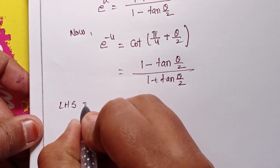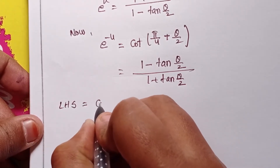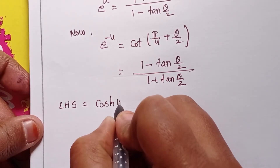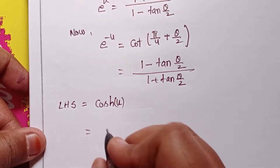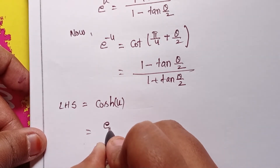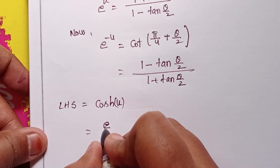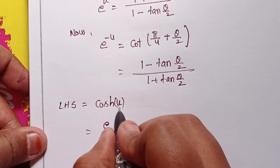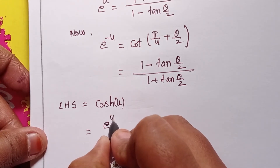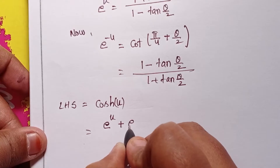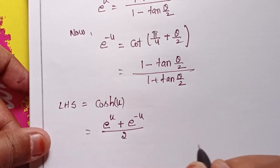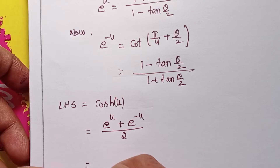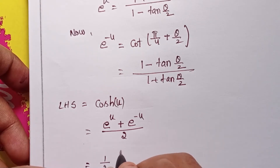The LHS is given as cosh u. The formula for cosh x is (e^x + e^(−x)) / 2. Here, in place of x, u is there, so cosh u = (e^u + e^(−u)) / 2. Now I will substitute the values of e^u and e^(−u).